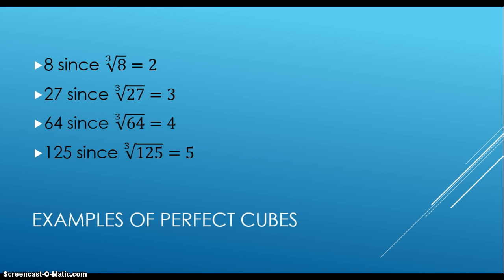Some examples of perfect cubes: 8, because the cube root of 8 is 2; 27, because the cube root of 27 is 3; 64, because the square root of 64 is 4; and 125, because the cube root of 125 is 5.